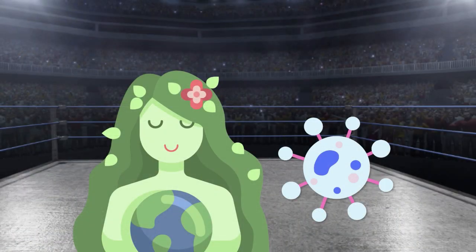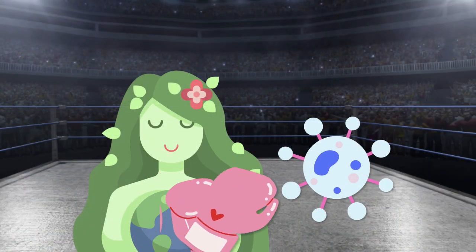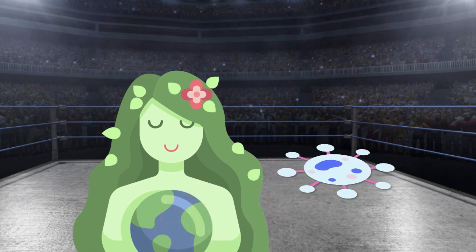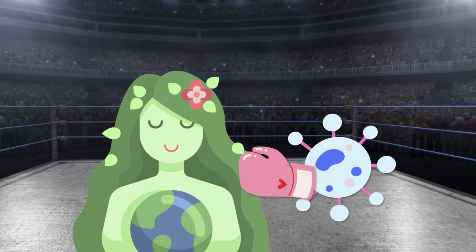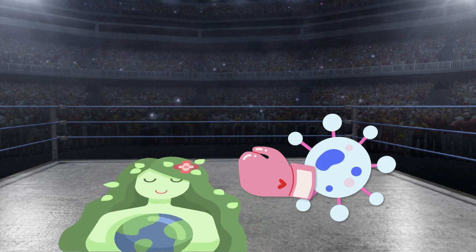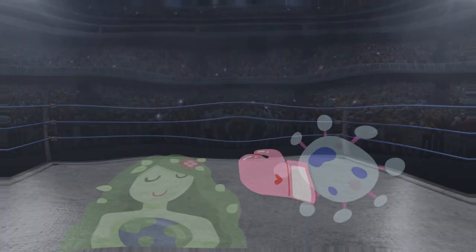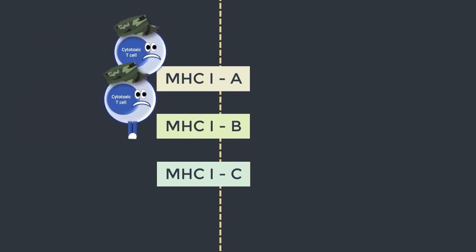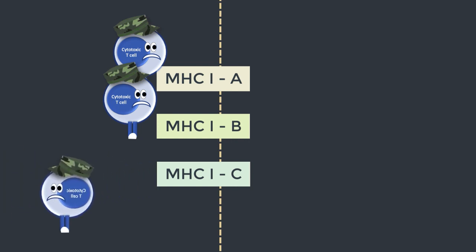As much as I would like to portray the story where Mother Nature wins and viruses lose, the truth is that some viruses have evolved to get around both NK cells and cytotoxic T cells, and this is annoyingly clever. Our MHC1 molecules come in several forms: A, B, and C. T cells primarily interact with HLA-A and B, and to a lesser extent C. And here lies a loophole for viruses.